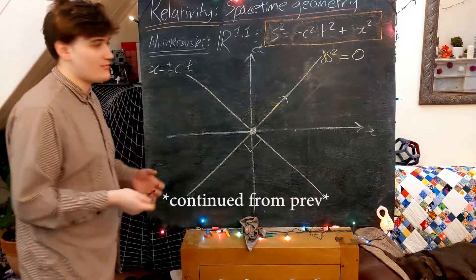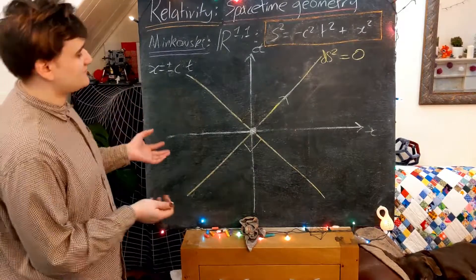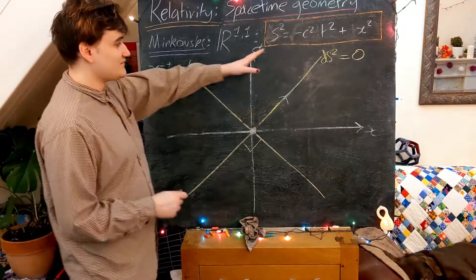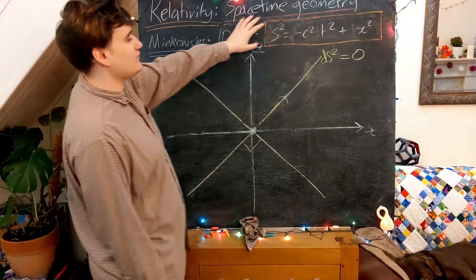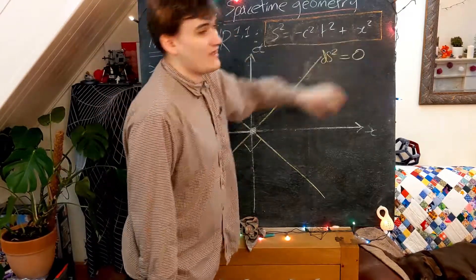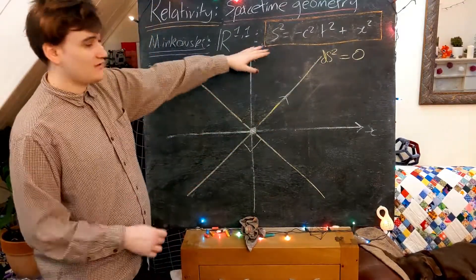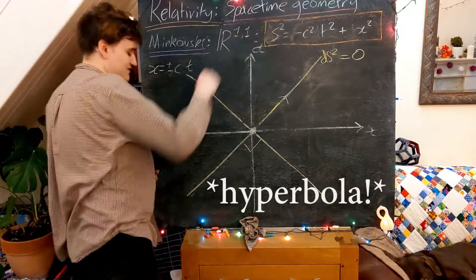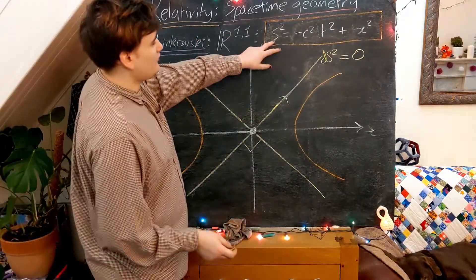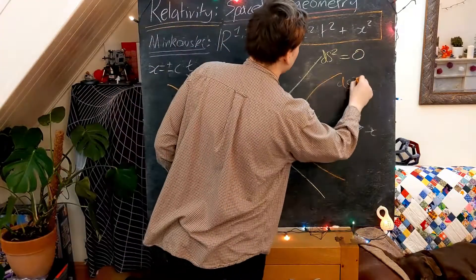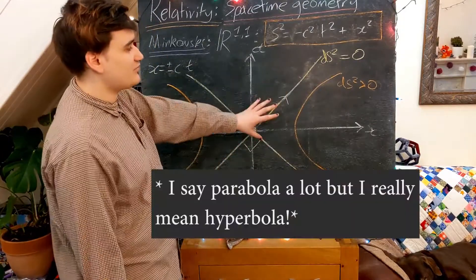Let's consider the points which have a positive or negative separation from the origin and see what they represent. We'll look at points with a positive spacetime separation from the origin, where s squared is some positive value, meaning c squared t squared has to be less than x squared. If we simply plot these parabolas where s squared is some positive constant, we can see that having a positive s corresponds to the points drawn on these two parabolas.